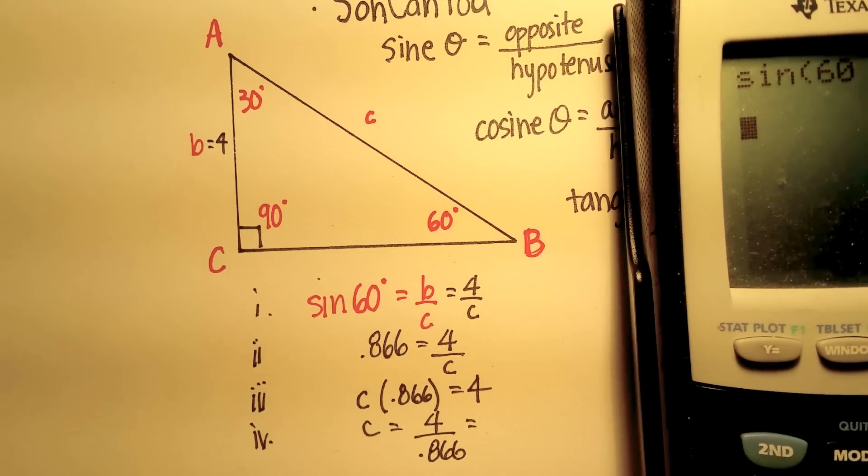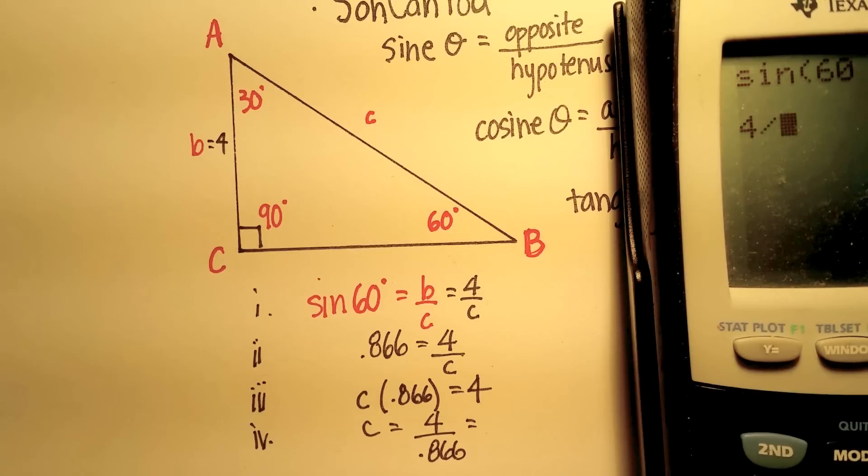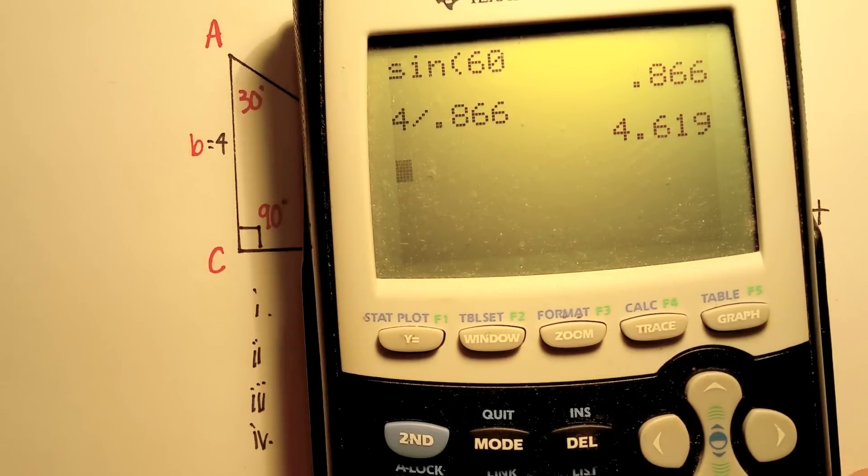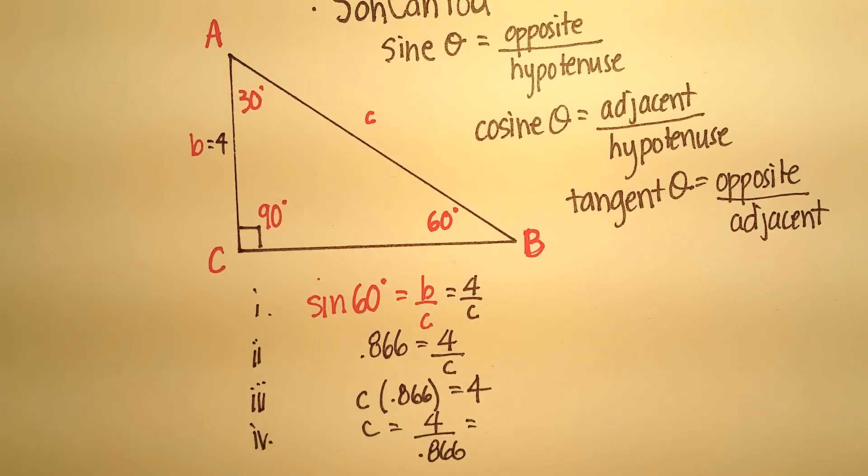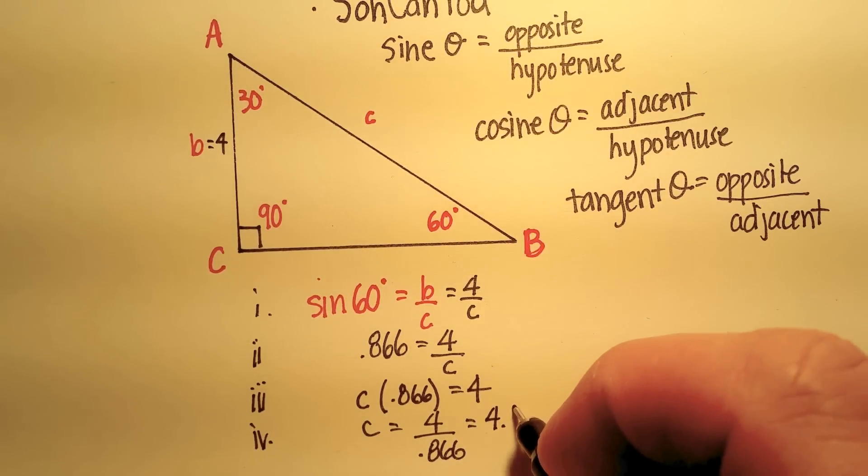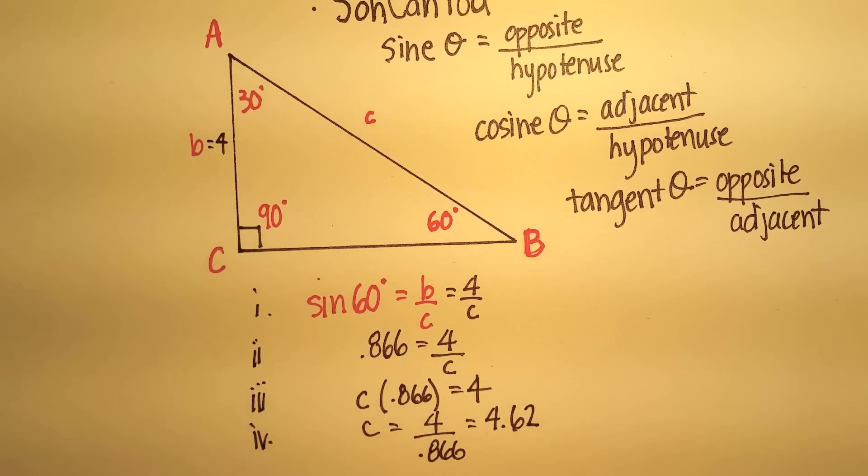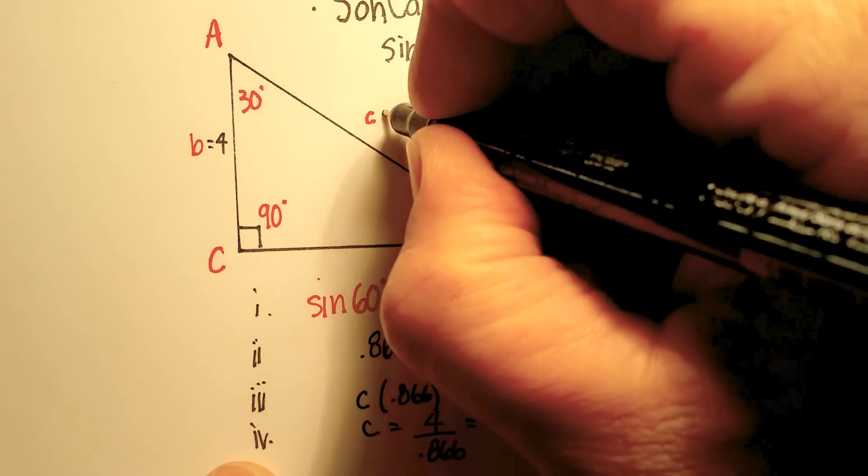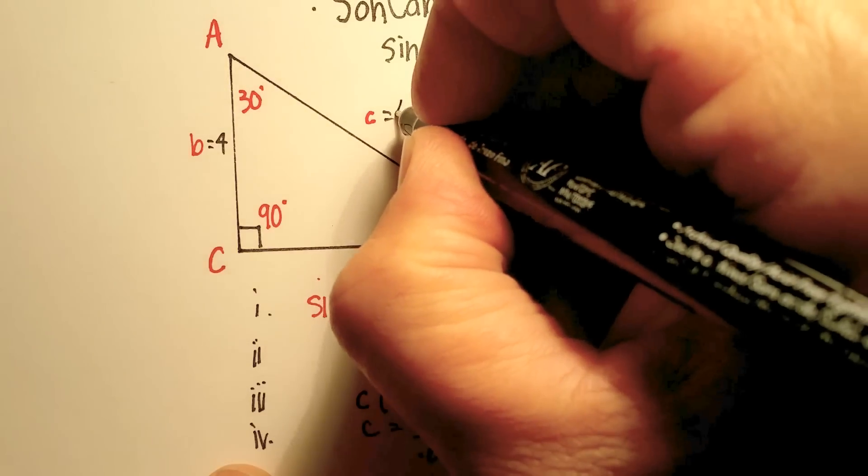Let's just try that real quickly. 4 divided by 0.866, and that's equal to 4.619. And we'll just say 4.62. So now we know that c is equal to 4.62.